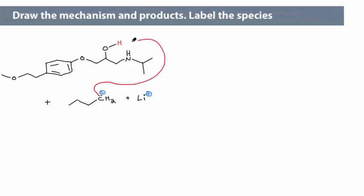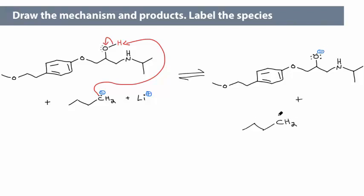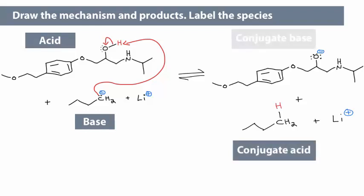Next, we draw the acid-base mechanism. Draw the products, and label the acid, the base, the conjugate acid, and the conjugate base. Now we can compare the species.